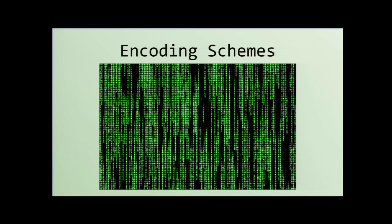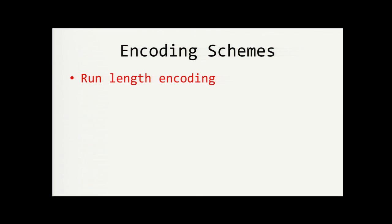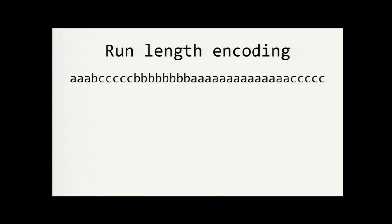Encoding schemes are sort of the building blocks for lossless compression. Run-length encoding is one useful scheme. It replaces repeated occurrences, or runs, of the same data value with a value and count pair. So, here's a string that would be ideal to run length encode. It begins with three consecutive A's. Next, there's a single B followed by five C's, eight B's, 14 A's, and five more C's.